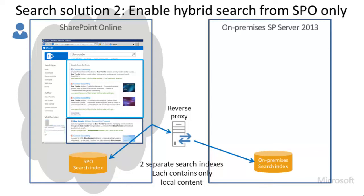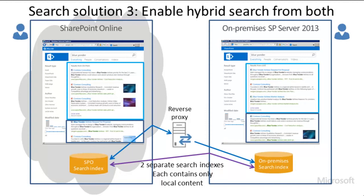For Hybrid SharePoint Search Solution 3, we implement both Solution 1 and Solution 2 so that users working in either deployment can get search results from the search indexes of both deployments. Since the two search solutions require the same base configuration other than the reverse proxy and are otherwise independent of one another, an organization can provide either solution first and optionally then also provide the other solution.